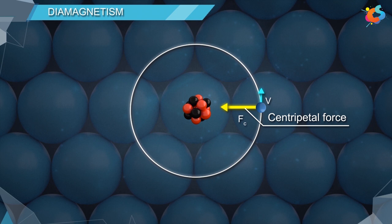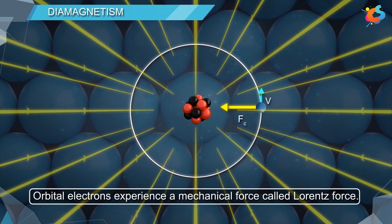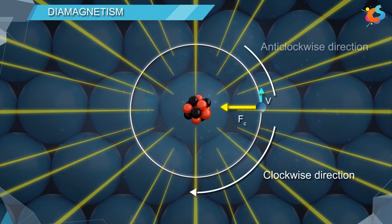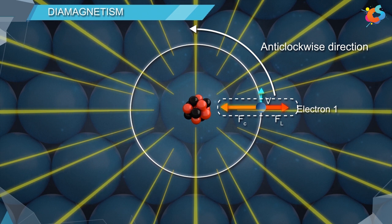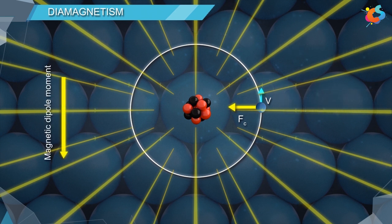When the diamagnetic material is placed in an external magnetic field, each orbital electron experiences a mechanical force called the Lorentz force. The direction of the Lorentz force depends on whether the electron is moving clockwise or anti-clockwise. If the electron is moving anti-clockwise, the Lorentz force is radially outward. Since the centripetal force and Lorentz force act on the same line in opposite directions, the effective centripetal force decreases. Due to this, the velocity and magnetic dipole moment of the electron decrease.